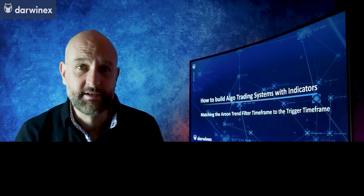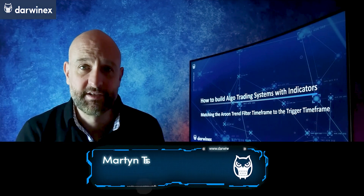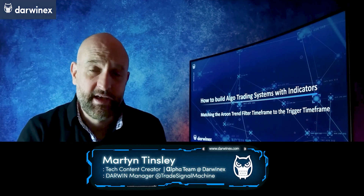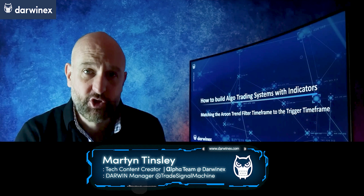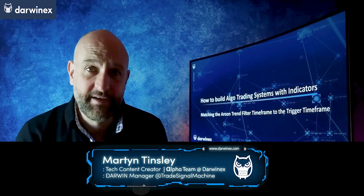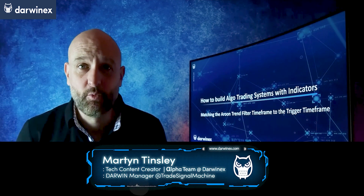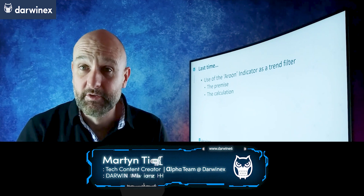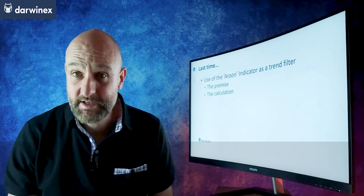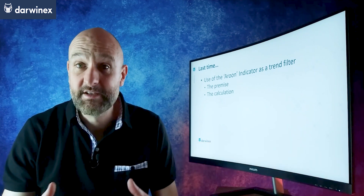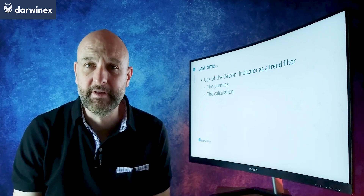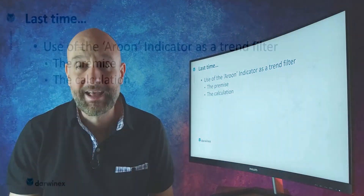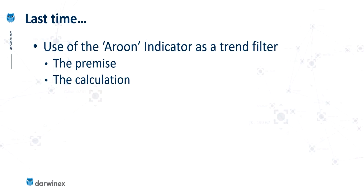The type of indicator that I chose to focus our attention on was the type with two lines, and the specific example was the Aroon indicator. And we looked at the underlying premise, or the reason this works well as a trend filter, and also we looked at the calculation behind it.